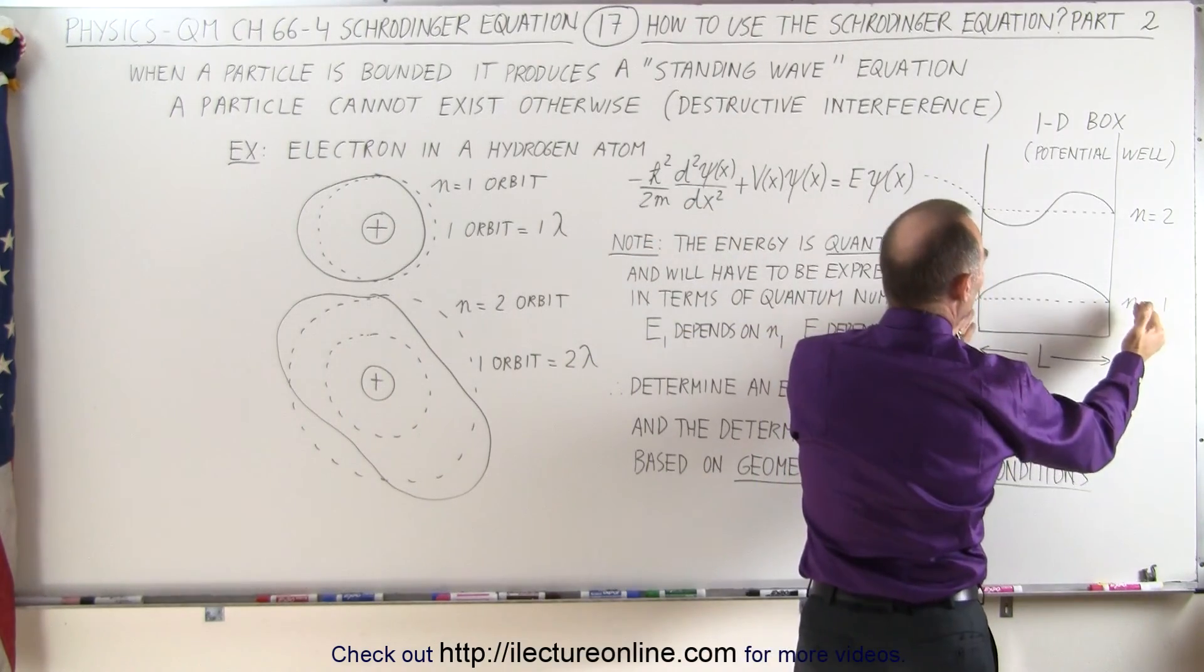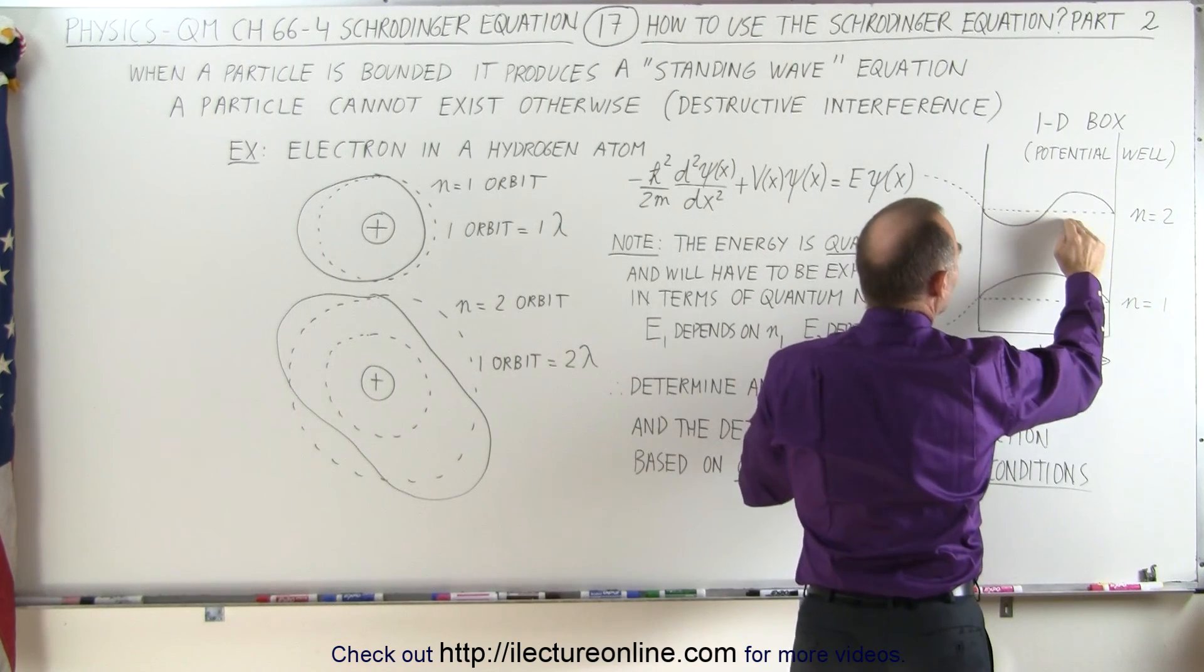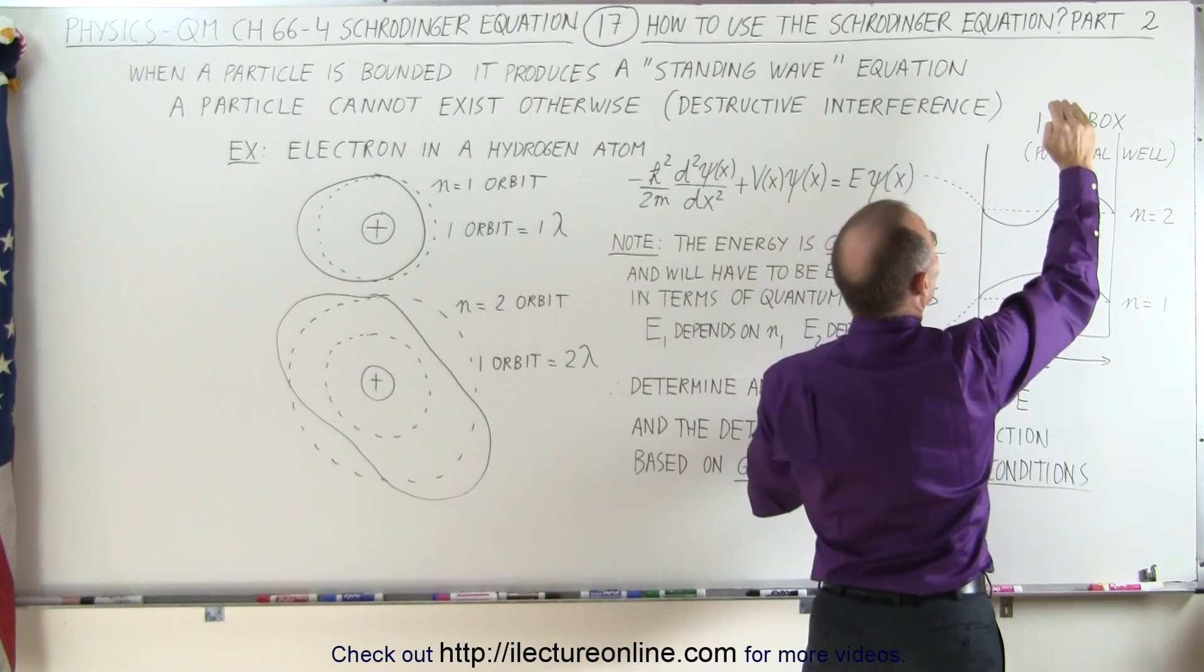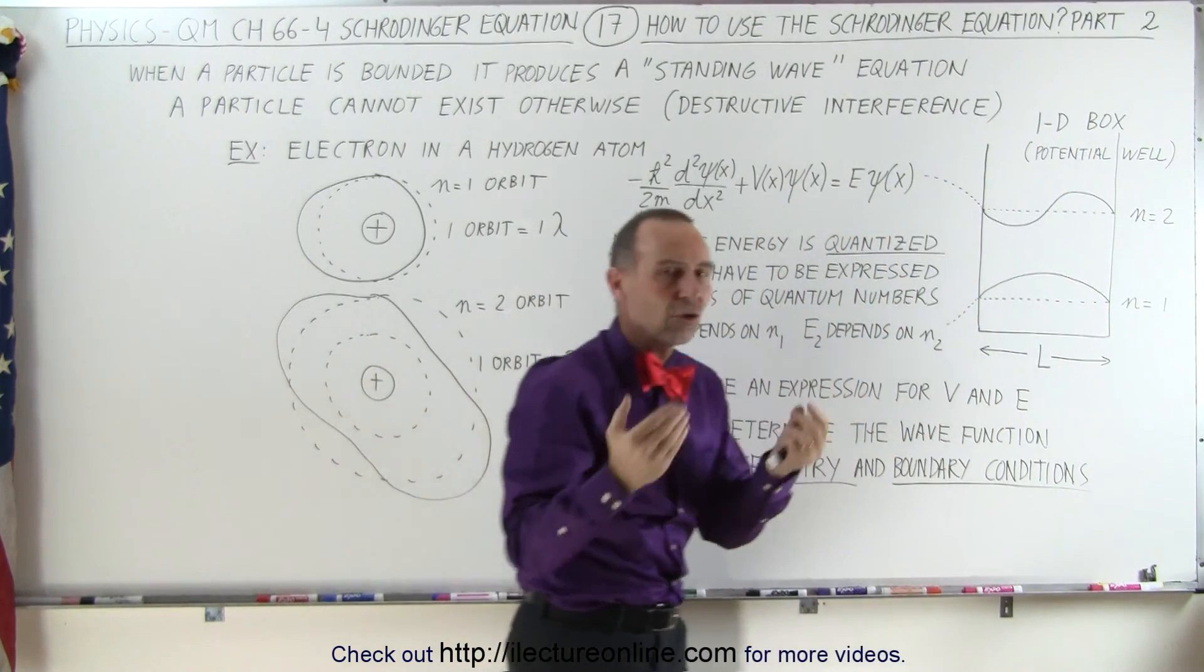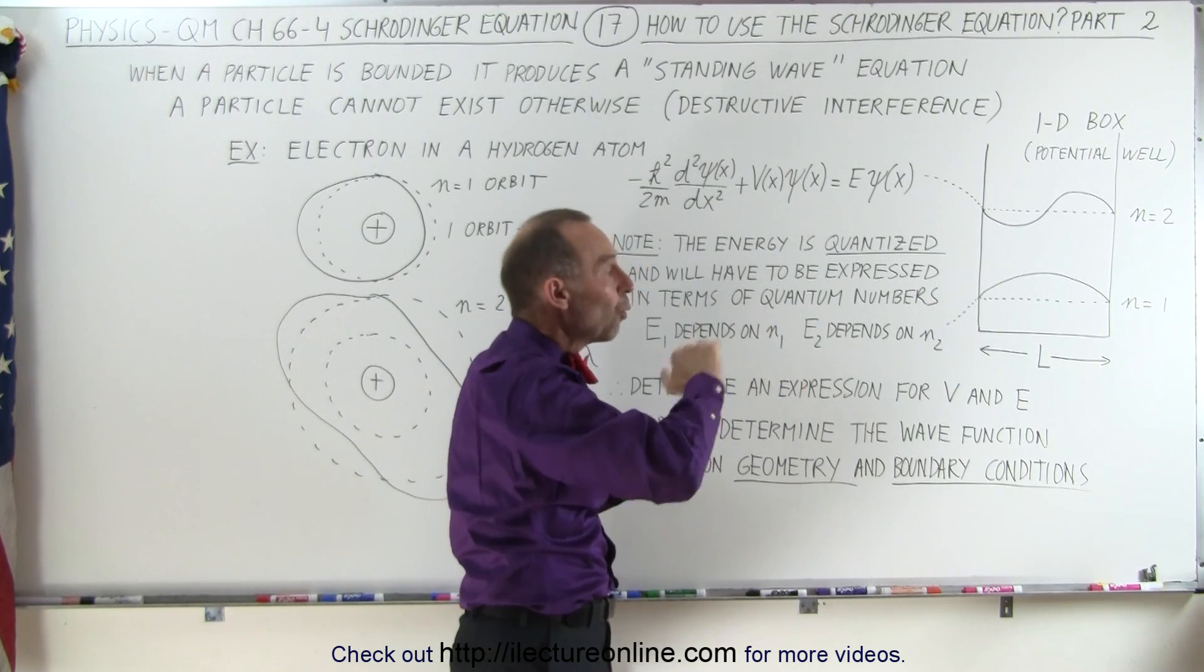So here we have the n equals one location, the lowest energy location, the second energy location, the third energy location, and so forth, each then being associated with specific boundary conditions and specific wave functions.